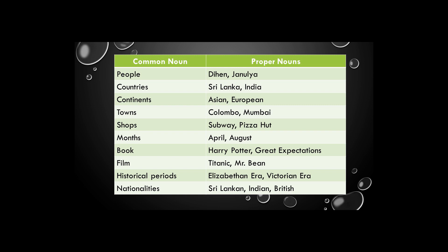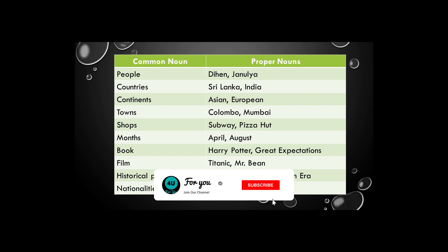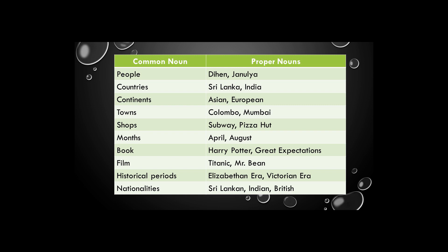Let's see some examples. For people: Janulya is a name of a person. Sri Lanka and India are specific names of countries. Asian and European are names of continents.